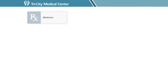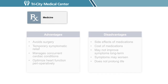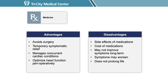Let's go through medications first. The advantages are that it avoids surgery, can provide temporary symptomatic relief, and allows management of concurrent cardiac conditions. You can also optimize heart function perioperatively if surgery is needed. The disadvantages include the side effects of medications, the cost, the fact that medications may not improve symptoms for very long, and that they do not prolong life once aortic stenosis has progressed to severe.